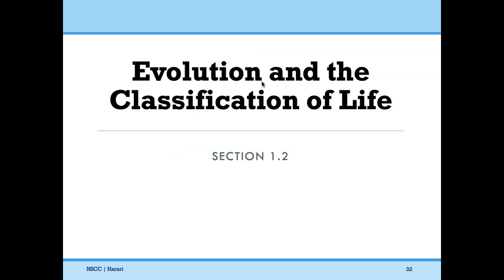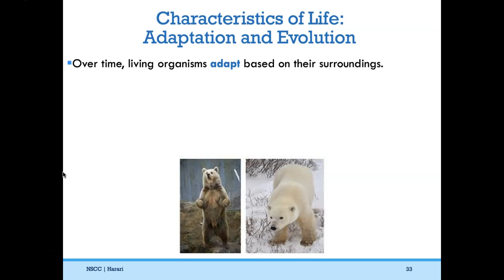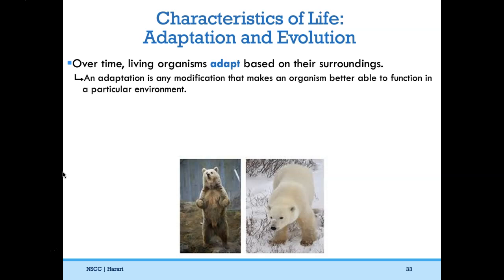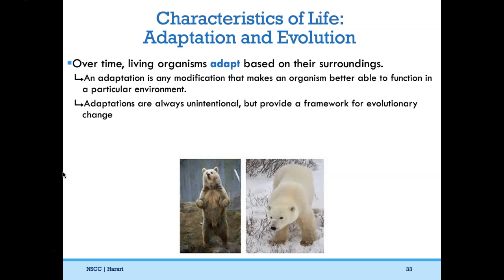Now we move on to section 1.2, evolution and the classification of life. Over time, living organisms adapt based on their surroundings. An adaptation is any modification that makes an organism better able to function in a particular environment. It's important to know that adaptations are always unintentional but provide a framework for evolutionary change. Take the example of these bears — this bear did not choose to be white, but being white allows it to camouflage with the snow and avoid being eaten by a predator.